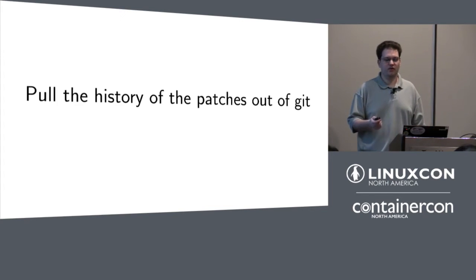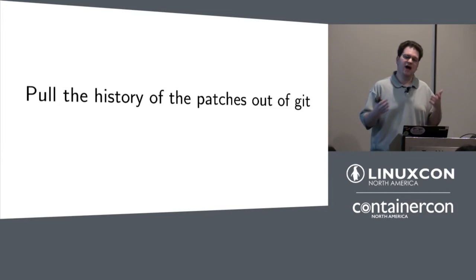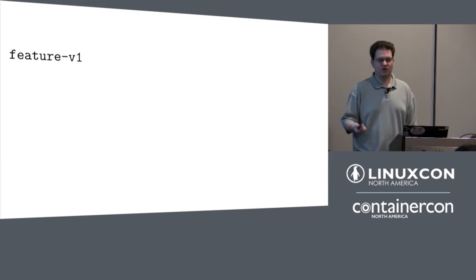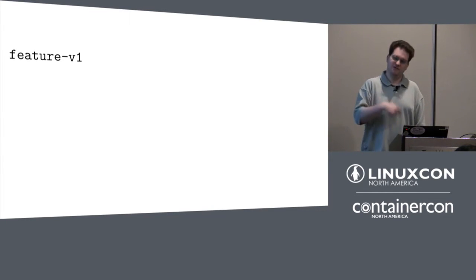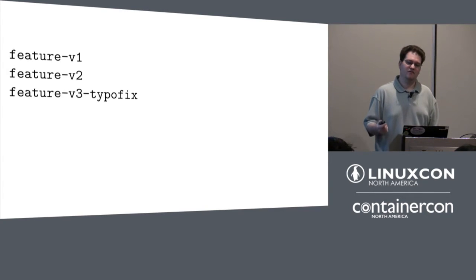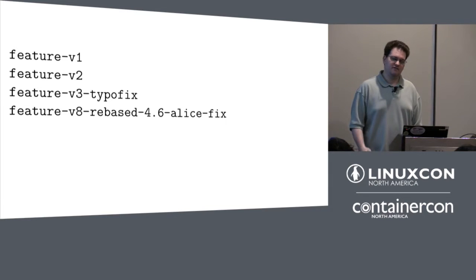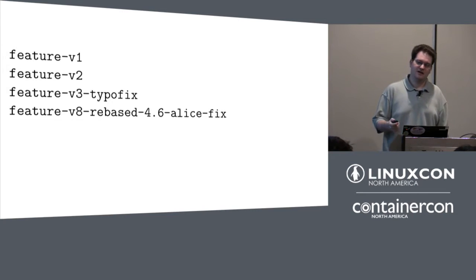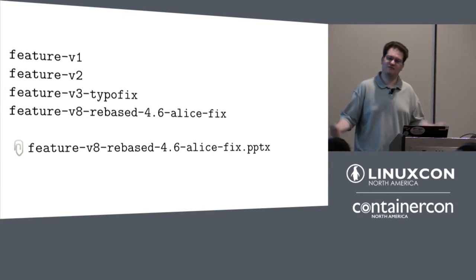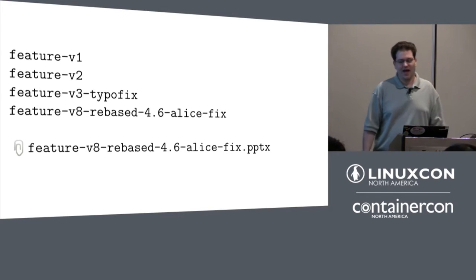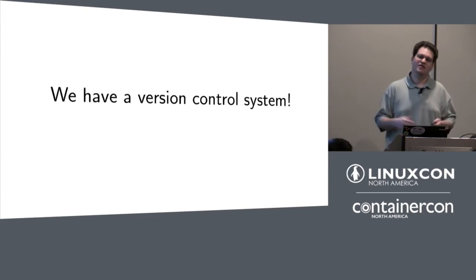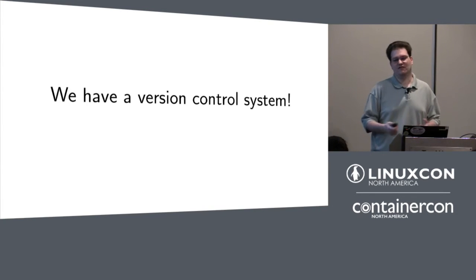The other approach — and the one I've used most frequently — is pulling the history of the patches out of Git. You keep the patches themselves in Git, do your rewrites as needed, and every time you come up with a new version, you version the branch names. So you might have a branch named Feature-V1 — which was probably named Feature, then renamed V1 when you realized you needed a V2 — then a V3 with the typo fix, and a V8 rebase on top of 4.6 with Alice's fix incorporated. At this point you just add a .pptx and attach it to an email, and everybody who's worked in a corporate environment feels right at home.